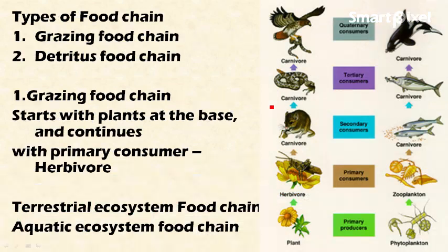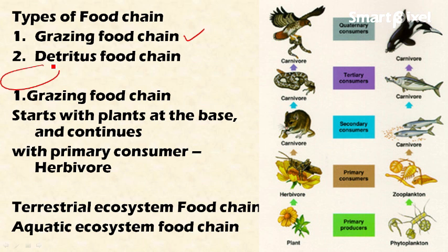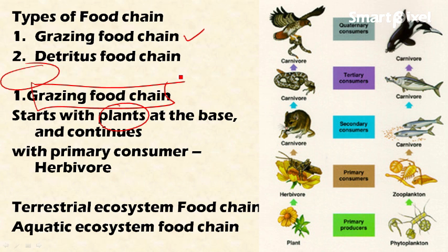There are two important types of food chain: the grazing food chain and the detritus food chain. The grazing food chain is classified based on the starting organism. In the grazing food chain, it starts with plants at the base and continues with the primary consumer.